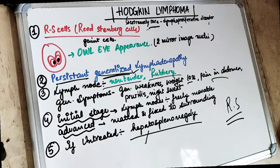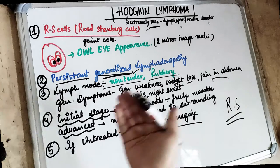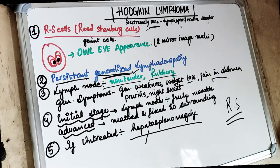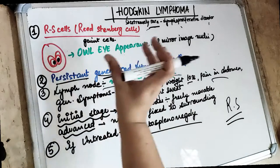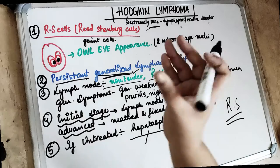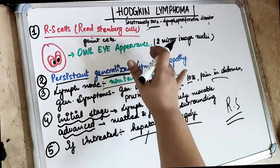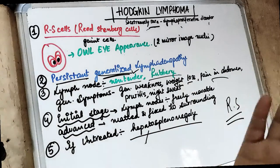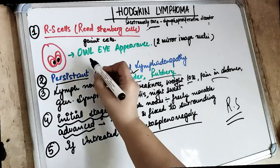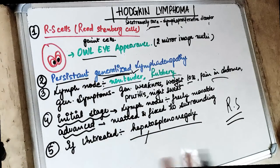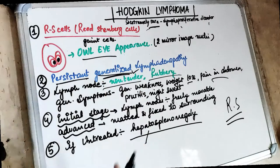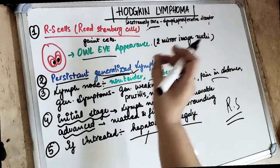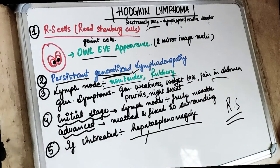If we take a histological section, there is going to be proliferation of the neoplastic lymphoid tissues as well as non-neoplastic inflammatory cells. The chief malignant cells in Hodgkin lymphoma are the Reed-Sternberg cells — giant cells having owl eye appearance — because the mirror image of nuclei looks like the owl's eye, which is a characteristic typical feature of Hodgkin lymphoma.